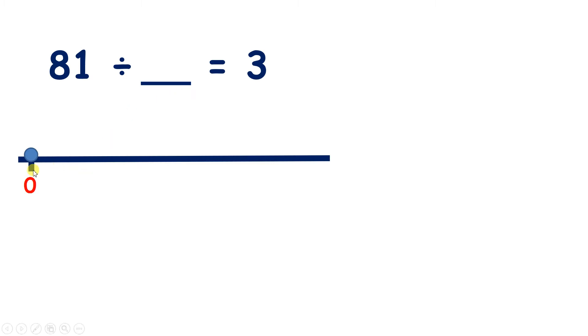So on a number line, we can count up in 3s until we get to 81. So let's start by making jumps of 10 times 3, or 30. 10 3s is 30, and then another 10 3s give us 60.